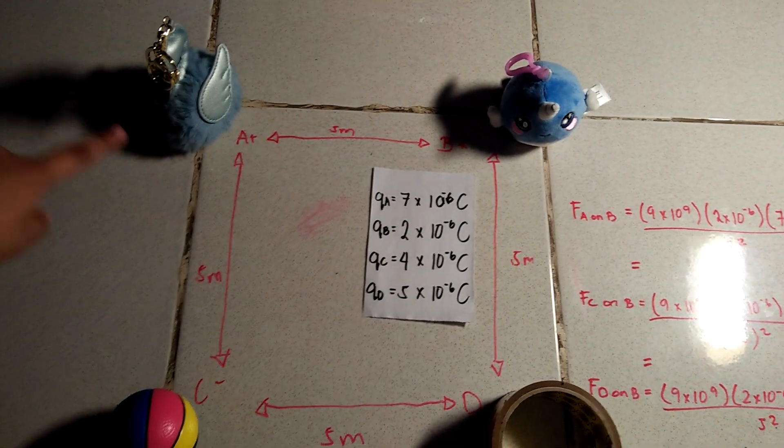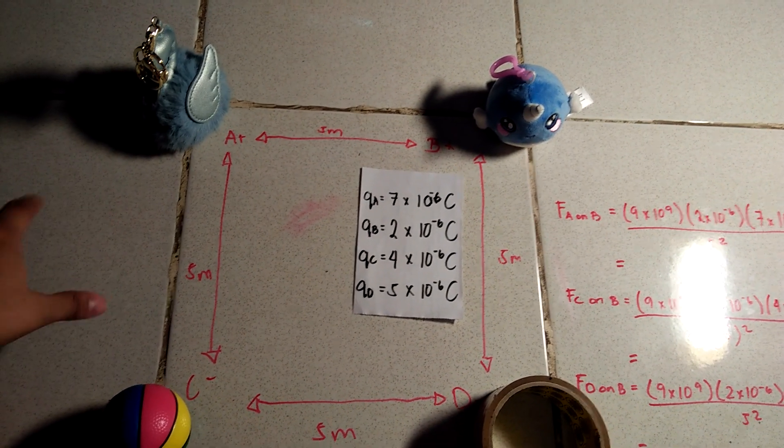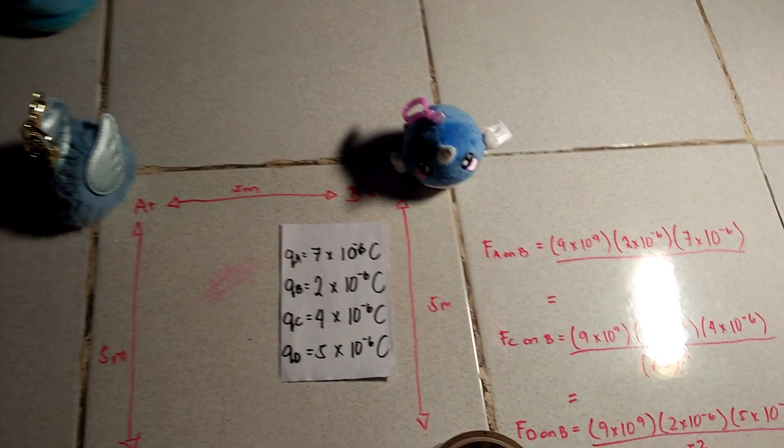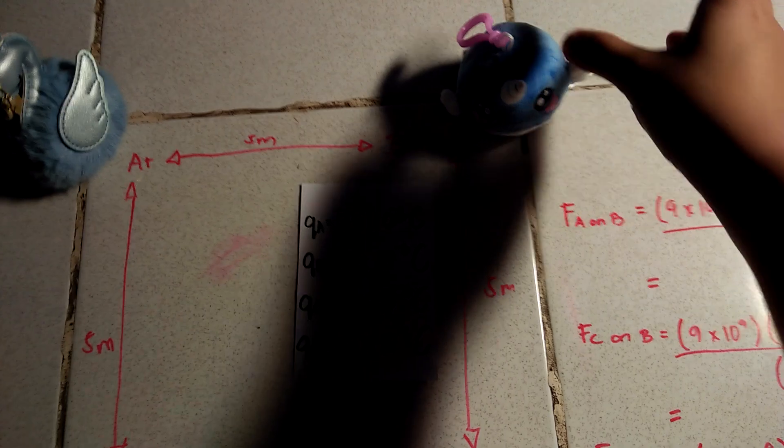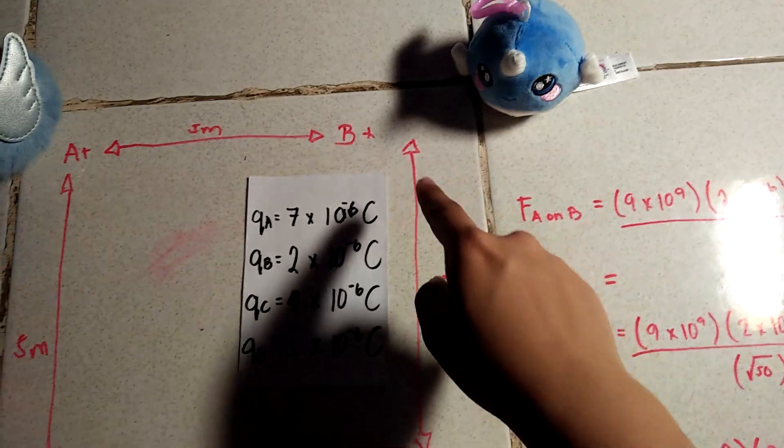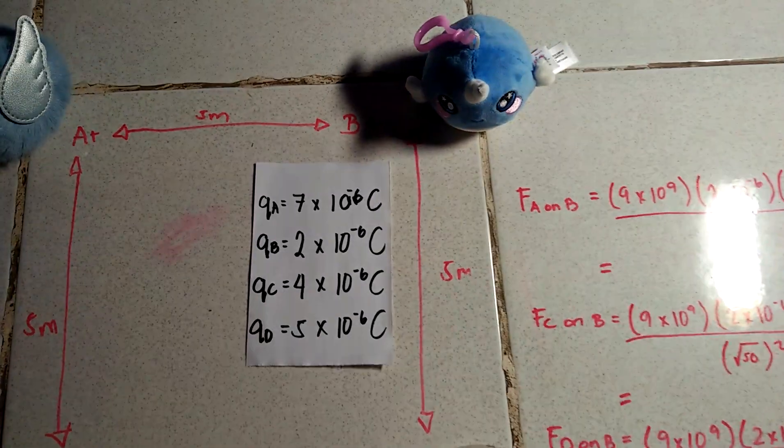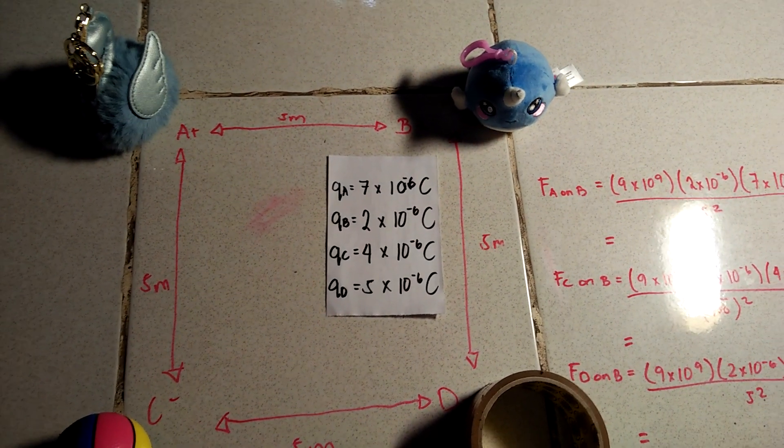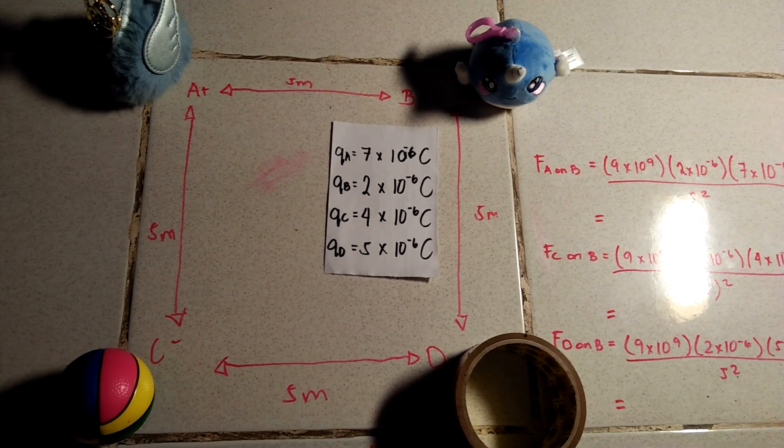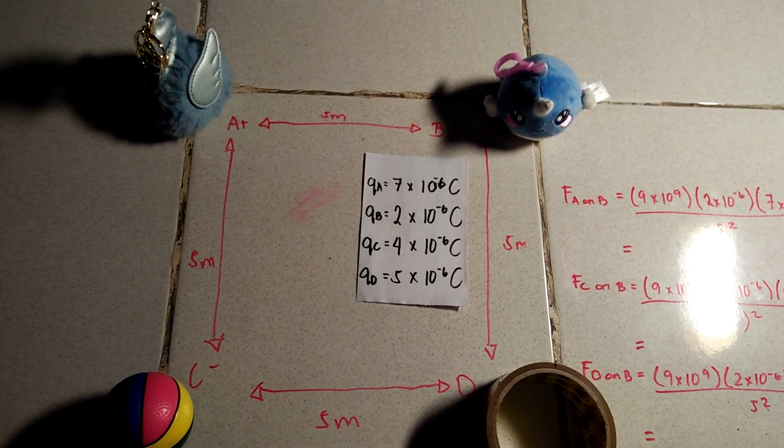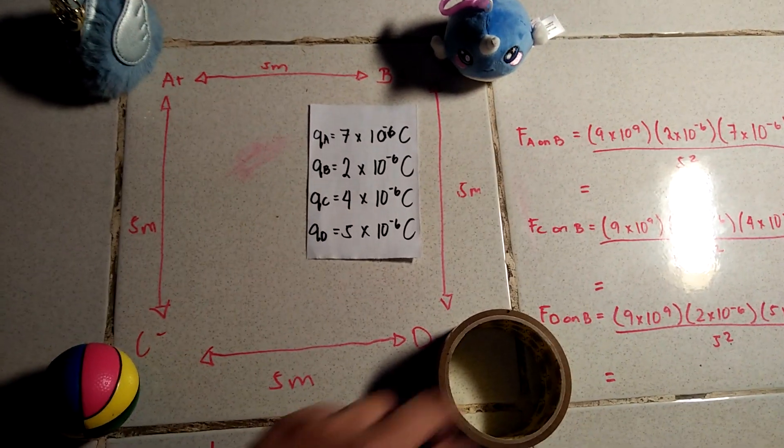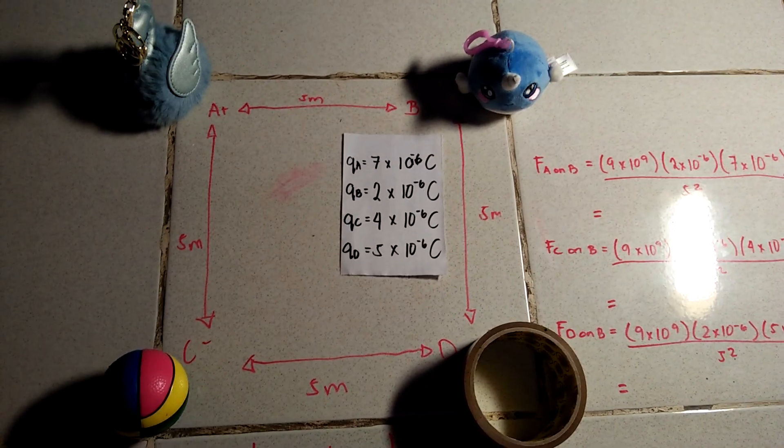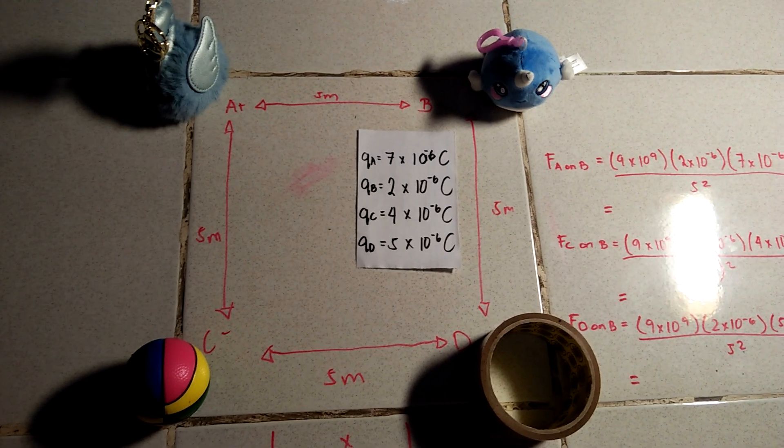So the charge of A, which is a swan, is positive 7 times 10 to the negative 6. For B, which is also positive, that's positive 2 times 10 to the power of negative 6. And then for C, which is negative, that's negative 4 times 10 to the power of negative 6. And D, which is also negative, that's negative 5 times 10 to the power of negative 6.